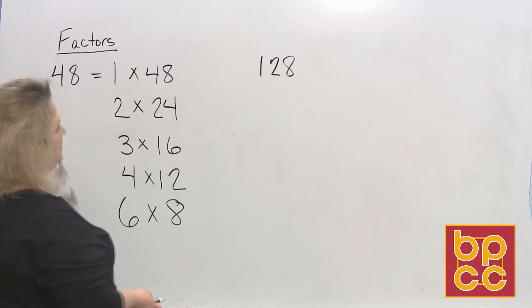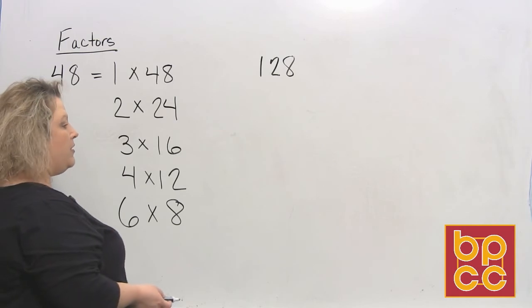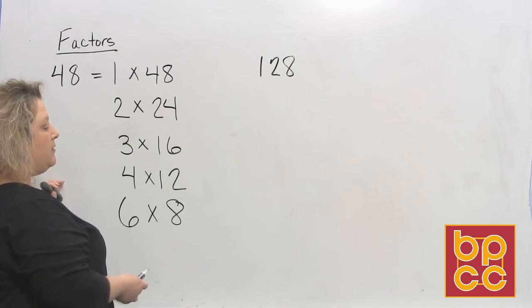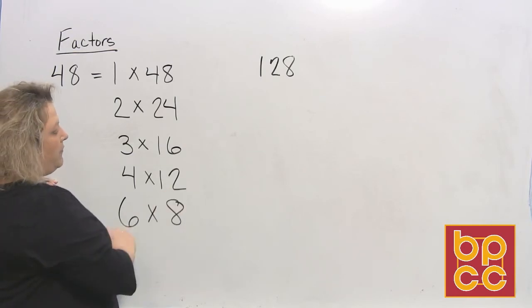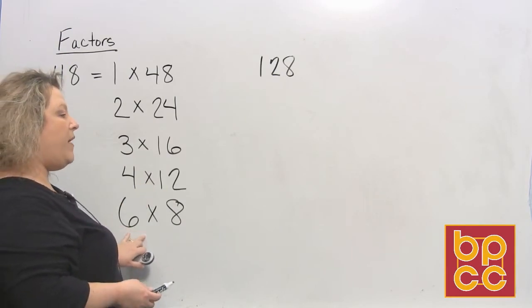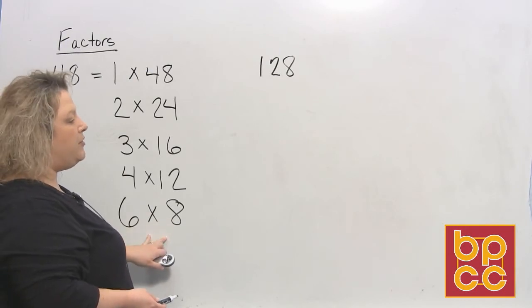9, when you add these digits together, you get 12. And 9 doesn't divide into 12 an even number of times, so 9 is out. 10 has to end in a 0 and it doesn't. 11 won't go in there. 12 we've already got. When you get down to naming factors and you have two that are super close together, most of the time you're done at that point. So let's go on and do 128.